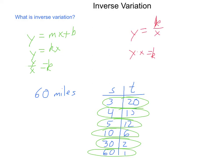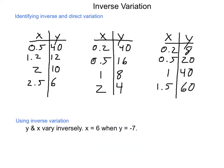So, how do we identify direct variation, inverse variation, or if something falls under neither category? Let's take a look at that. So, three tables here. For the first table, x, y, we have 1 half, 40, 1 and 2 tenths, 12, 2, 10, and 2 and a half, 6. If we constantly divide y by x, looking for direct variation, 40 divided by 1 half is 80. 12 divided by 1 and 2 tenths is 10. 10 divided by 2 is 5. And 6 divided by 2 and a half is 2 and 2 fifths.